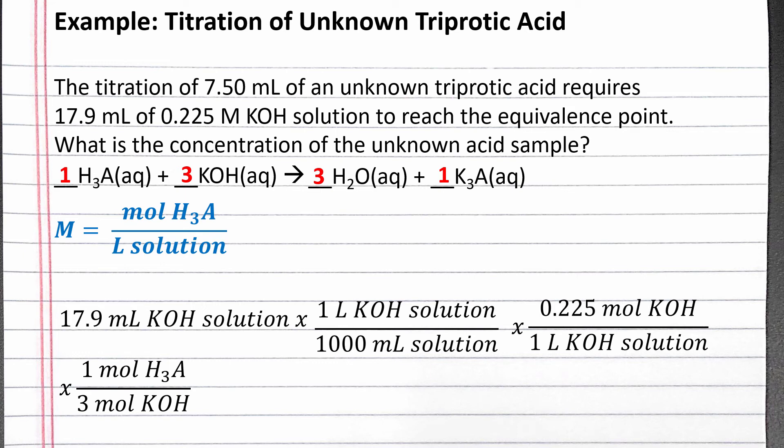We need 3 moles of potassium hydroxide for every 1 mole of our triprotic acid. Completing the calculation, we have 1.343 times 10 to the negative third moles of H3A.